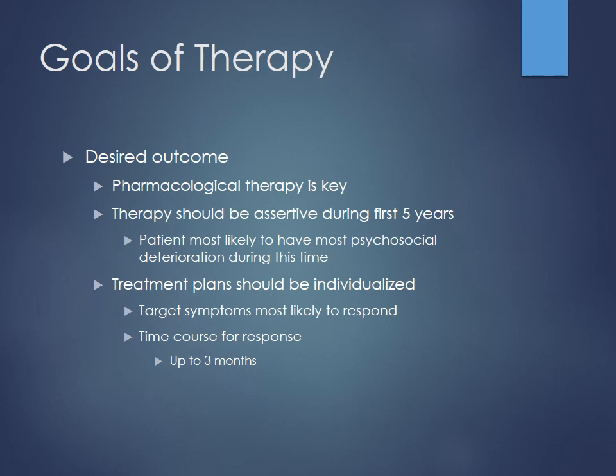Pharmacotherapy is the cornerstone of treatment for these patients. You want to be more assertive in the first five years — the earlier you can make the diagnosis, the better. There are no specific tests for schizophrenia; you go off the symptoms. Patients with first-degree relatives are higher risk. You'll find the most deterioration occurs early, so this is when we want to be most assertive. Therapy needs to be individualized based on whether patients have more positive or negative symptoms, and give at least three months before fully assessing effects.